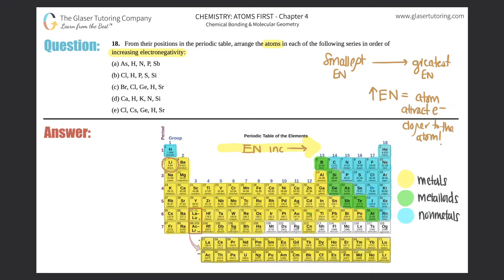The other trend is if you go from top to bottom, down a group, your electronegativity will decrease — same thing as ionization energy. So we've got increasing from left to right, and decreasing as we go from top to bottom.